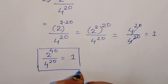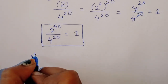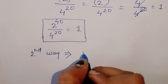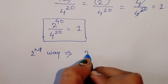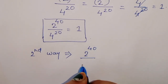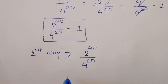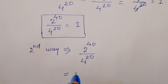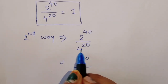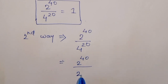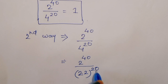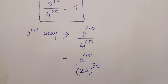In the second way, we do changes in the denominator. We write the question as 2 power 40 divided by 4 power 20. We rewrite 4 as 2 times 2, so the denominator becomes (2 times 2) power 20.